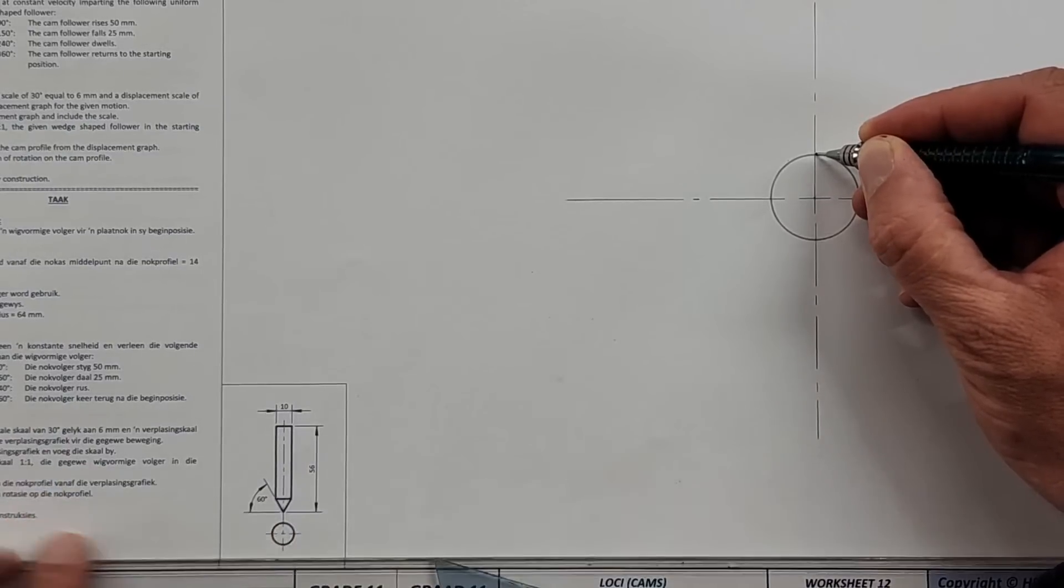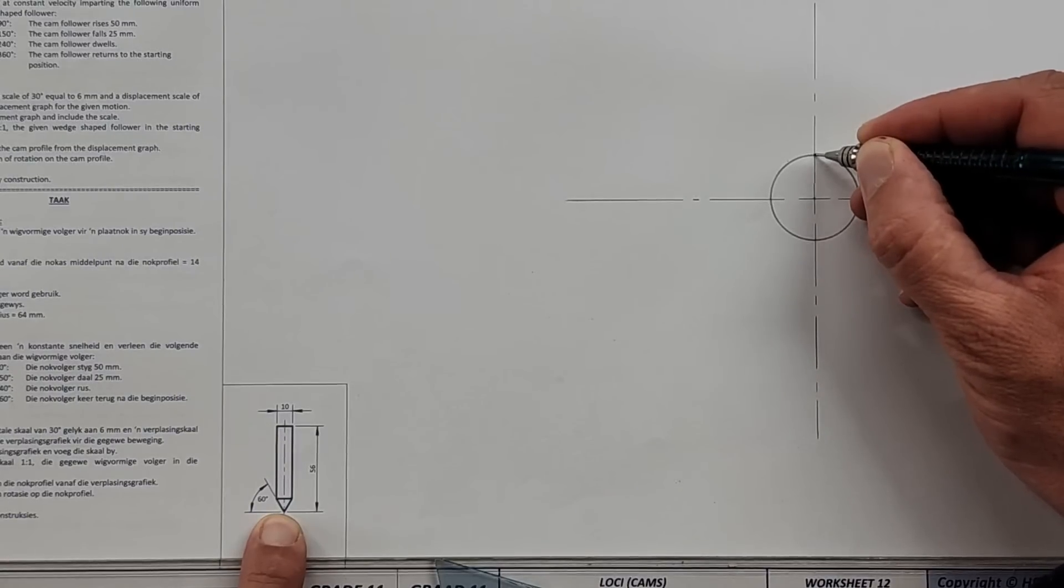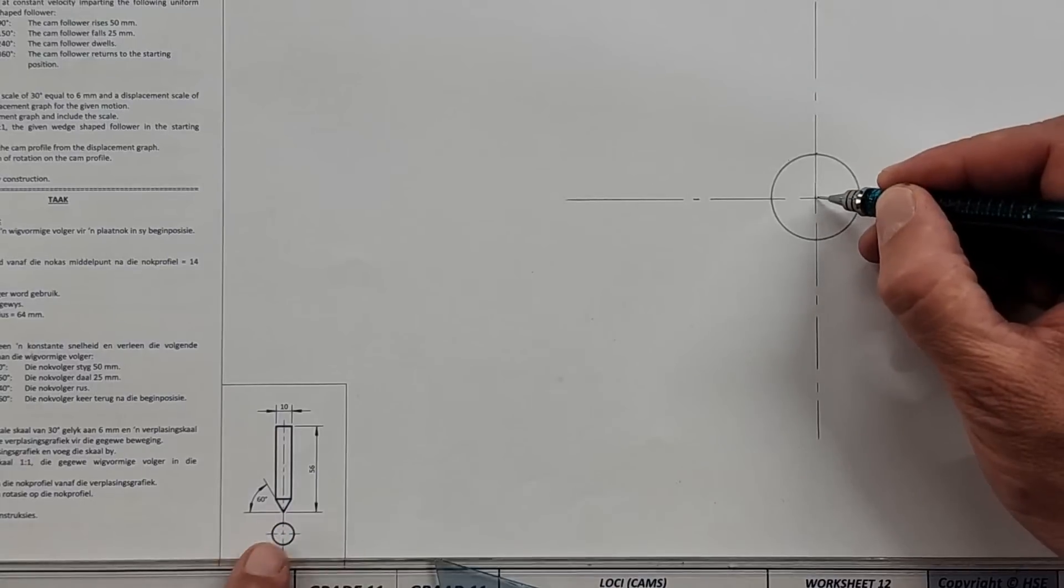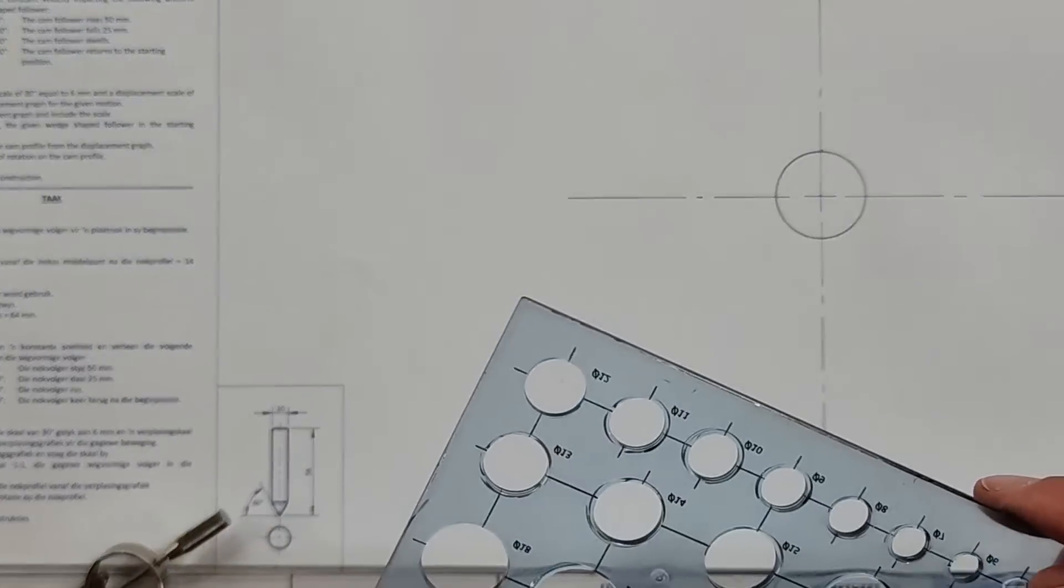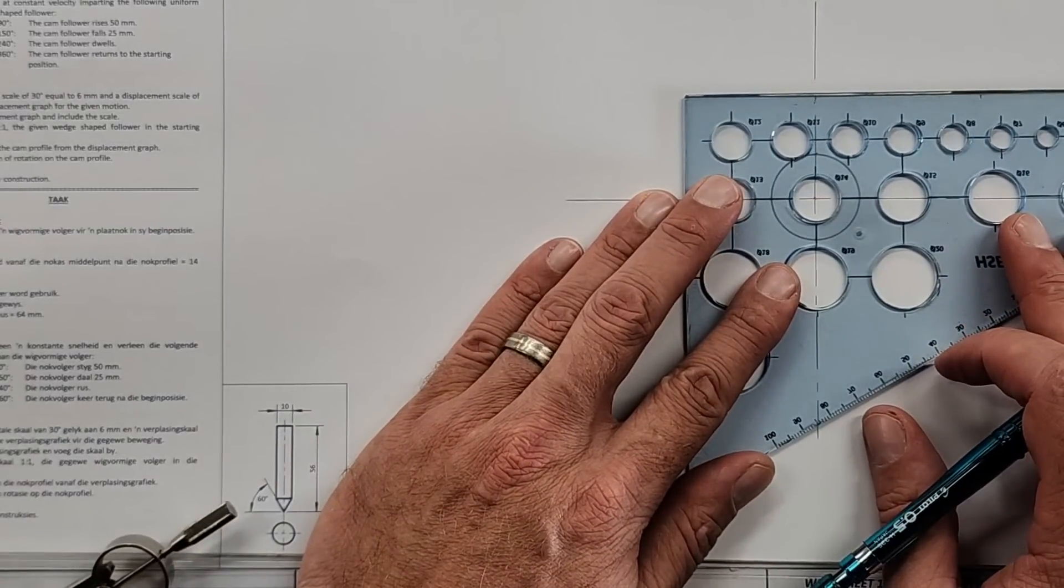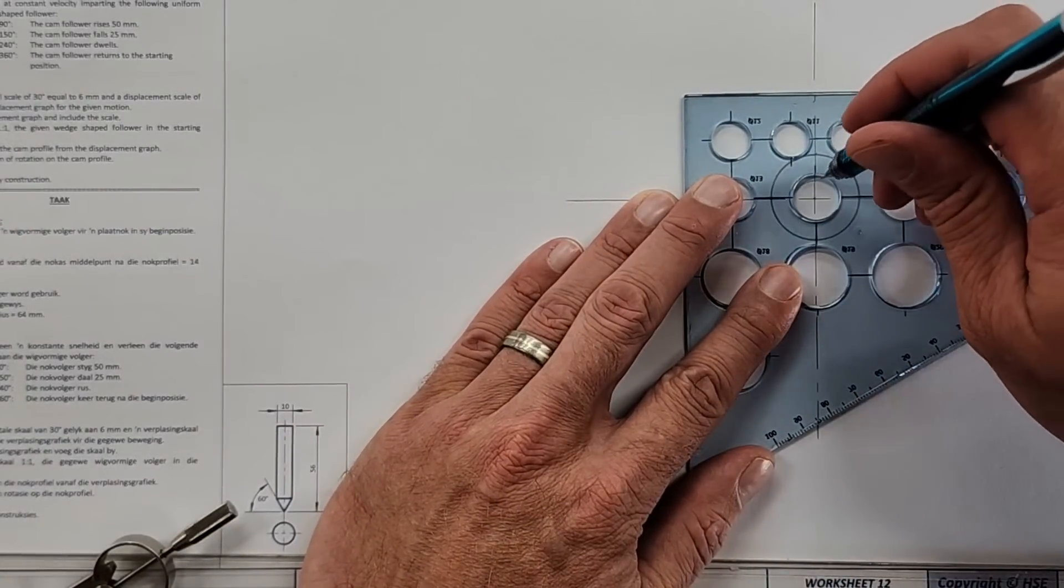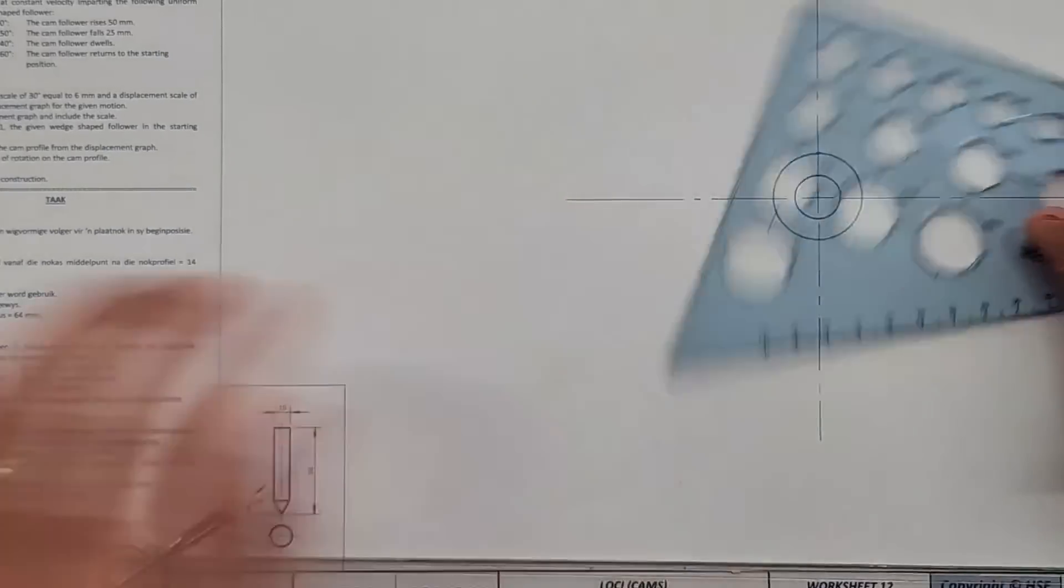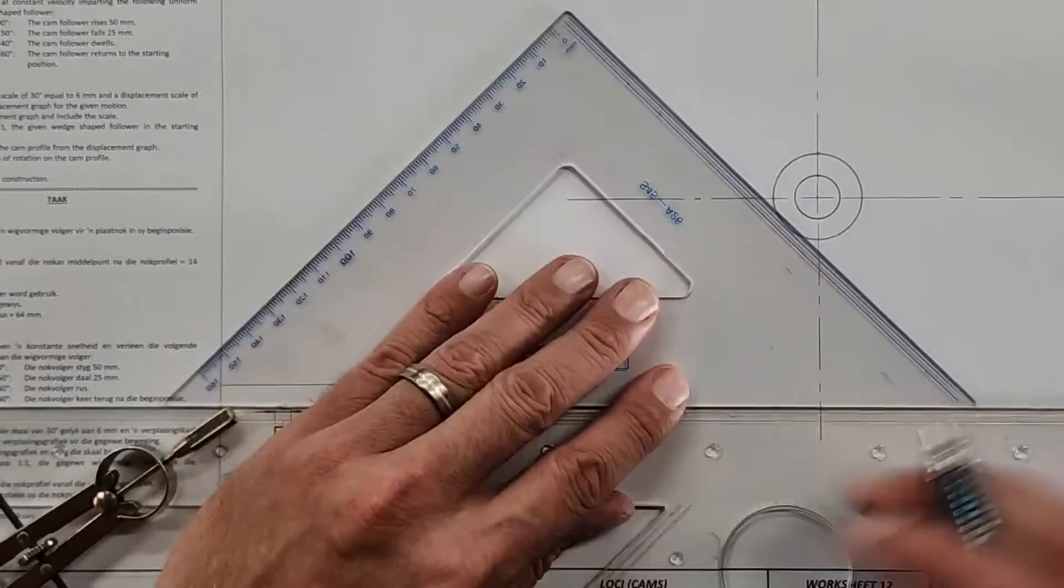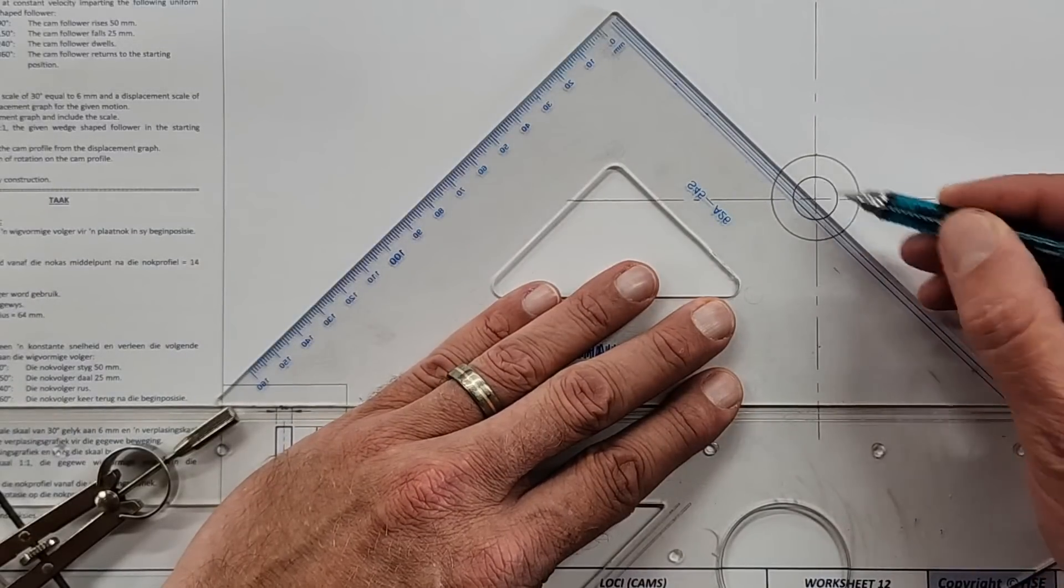Then they say the cam shaft has a diameter of 14, so for that one we can use a stencil if it's too small a radius to draw. Immediately make sure you hatch that because that's part of the requirement - the cam shaft will be hatched.